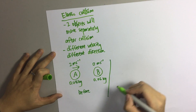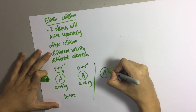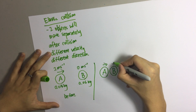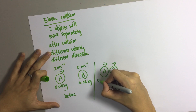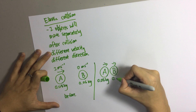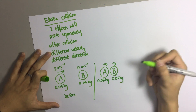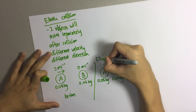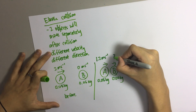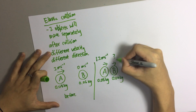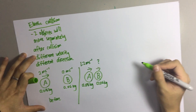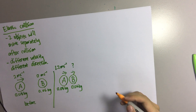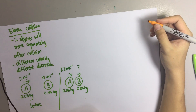After that, object A hits object B and now object B is moving. Object A still has a mass of 0.05 kilogram and object B's mass is still the same, but object A is now moving at 1.2 meters per second. The question asks you to find the speed of object B after collision. We now need to apply the principle of conservation of momentum formula.